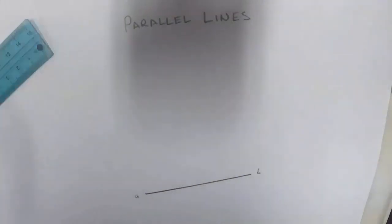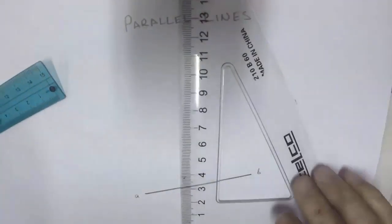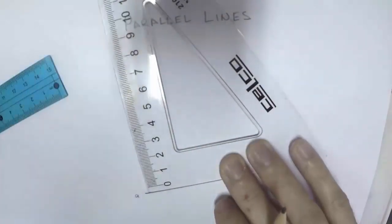The trick is what we have to do is we have to get our set square, we have to align it up onto the line that we wish to draw parallel.